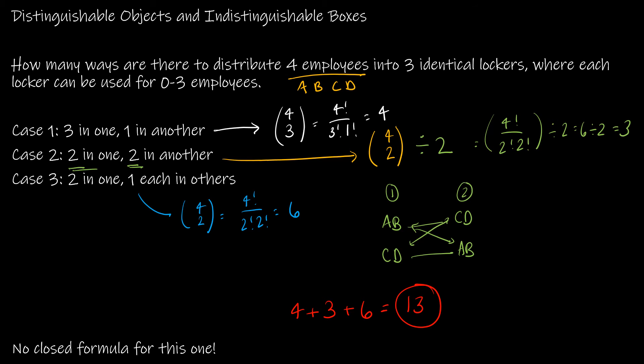13 is the correct solution, but there are many stumbling blocks: getting the cases right, remembering to divide by two in case two, and not mistakenly computing C(2,1) × C(1,1) for case three. There is no closed formula here — it's just a matter of working through it carefully.